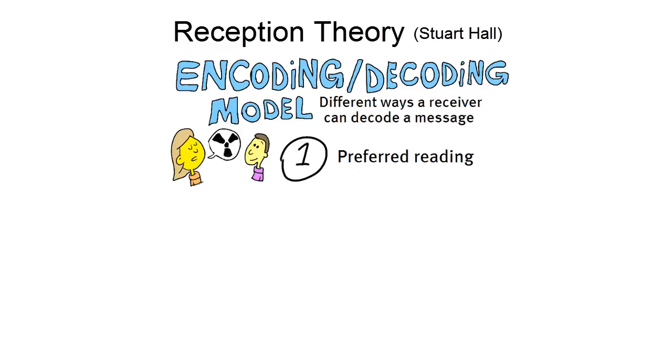According to reception theory, this is more likely to occur when Jake and Rose share a cultural background. For instance, if Jake is sympathetic towards the Conservative Party. If there is a higher cultural proximity between sender and receiver, there is also a higher likelihood of a preferred reading taking place.